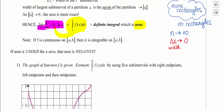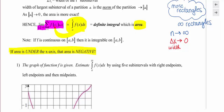One important thing: area is positional. If you have an area that is under the x-axis, it will be represented by a negative area. So if part of your curve is below the x-axis and part is above, the area below is negative and the area above is positive based on position.